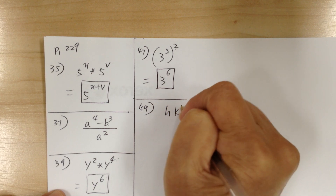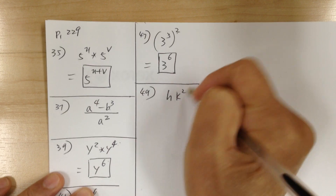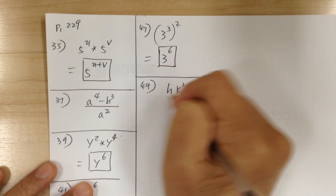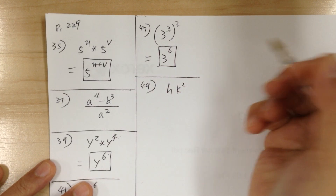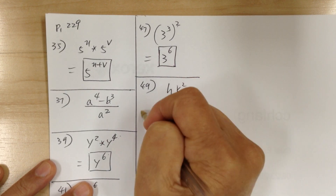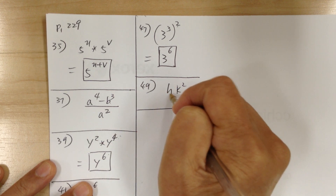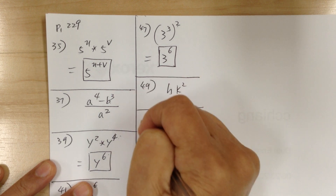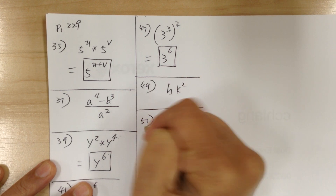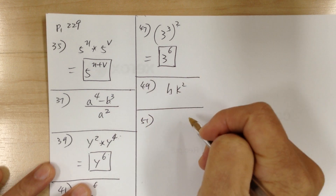You've got h times k squared. Nothing you can do to it because there are different bases. So nothing can be done — just leave it.